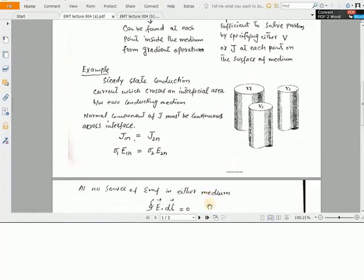Let us consider an example. Here we are considering the steady state conduction and we want to find out the current which crosses the interfacial area between two conducting systems. Let us consider one conducting system with potential V1 and the other conduction system with potential V2. So the normal component of J or current density must be continuous across the interface.